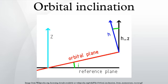An inclination of zero degrees means the orbiting body orbits the planet in its equatorial plane, in the same direction as the planet rotates. An inclination greater than zero degrees and less than 90 degrees is a prograde orbit.